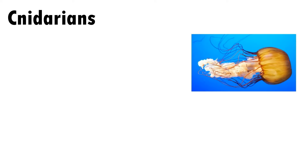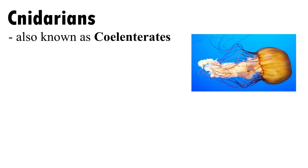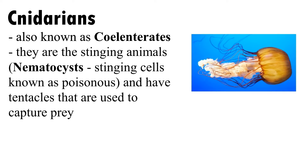Cnidarians, also known as coelenterates, are stinging animals. They have nematocysts — stinging cells that are poisonous — and have tentacles that are used to capture their prey.